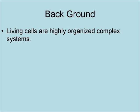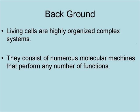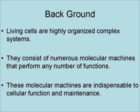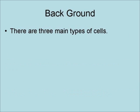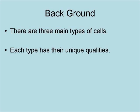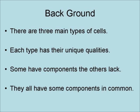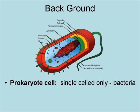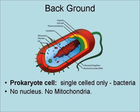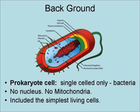Living cells are highly organized complex systems that consist of numerous molecular machines that perform any number of functions. These molecular machines are indispensable to cellular function and maintenance. There are three main types of cells, each with unique qualities. Some have components the others lack, but they all have some components in common. Prokaryotic cells, which are single-celled organisms only, like bacteria, have no nuclei and no mitochondria, and include the simplest living cells.